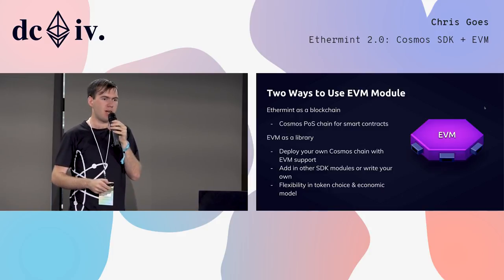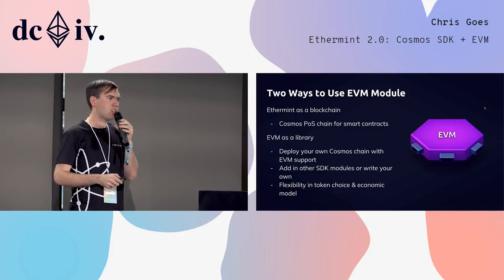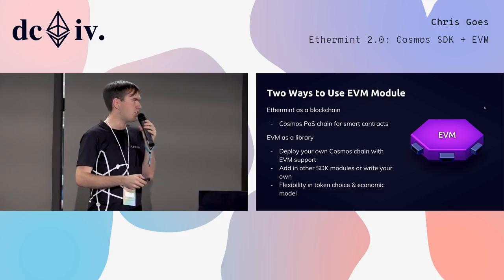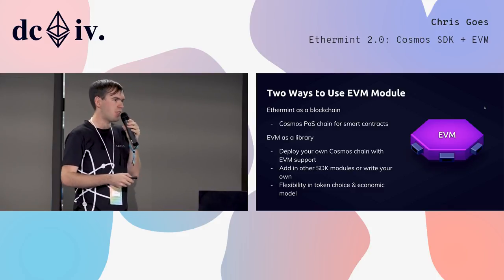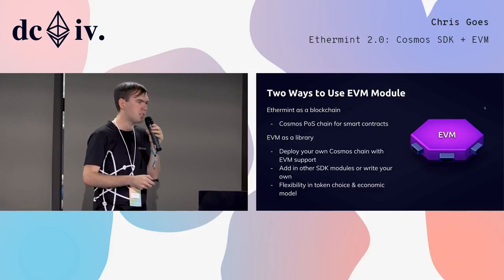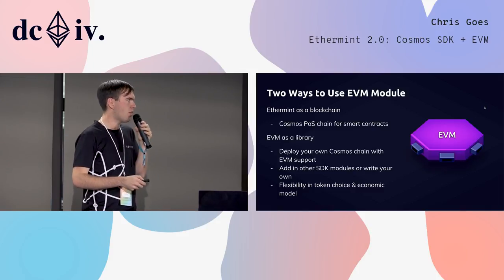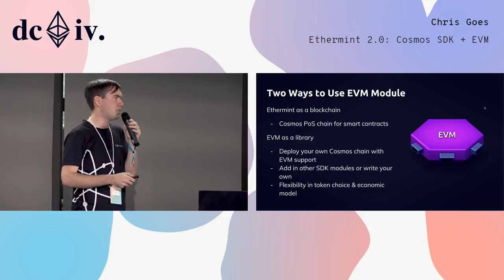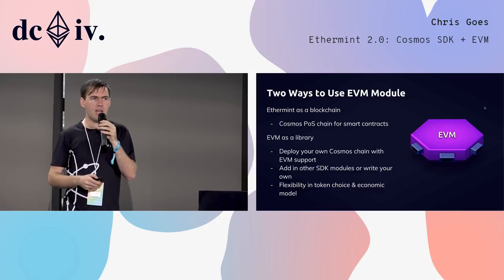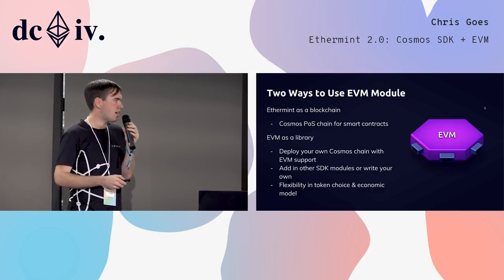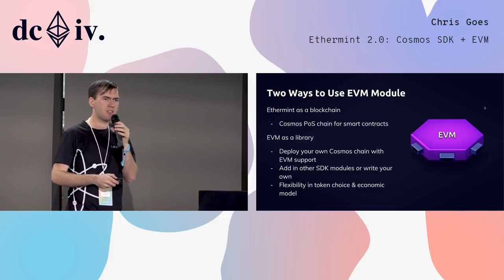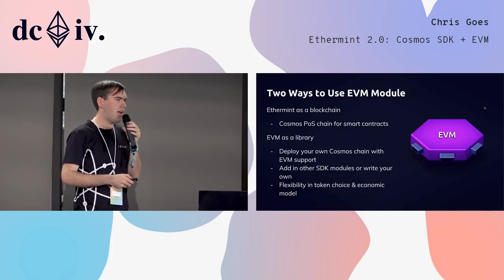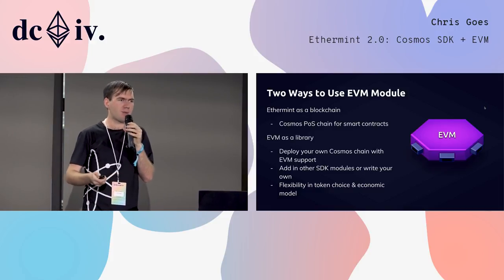There are two ways to use the EVM module. Ethermint will exist as a particular blockchain — a proof-of-stake chain with all the core modules, the EVM module, and the Web3 interface for running smart contracts. But the EVM module will also exist as a library. The EVM module as a library will allow you to deploy your own Cosmos chain with EVM support, add in other SDK modules in whichever combinations and parameter choices you like, and choose whatever token and economic model you want.